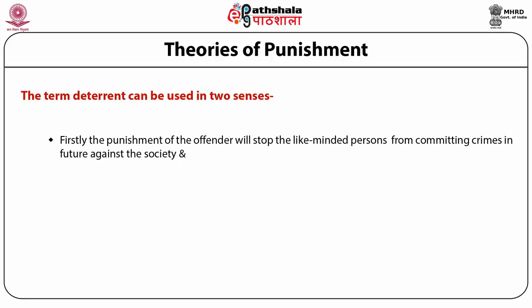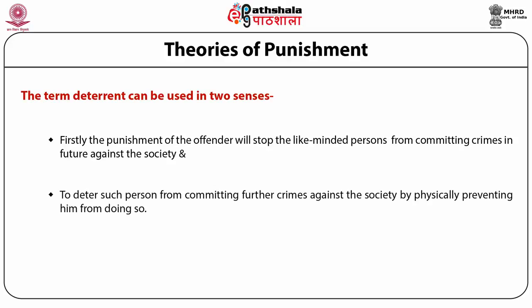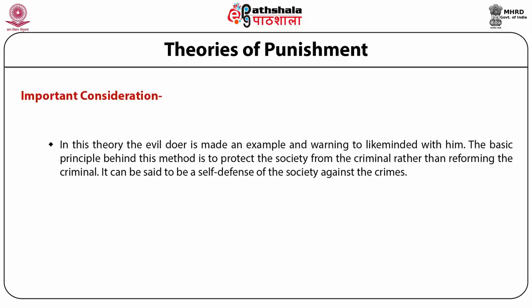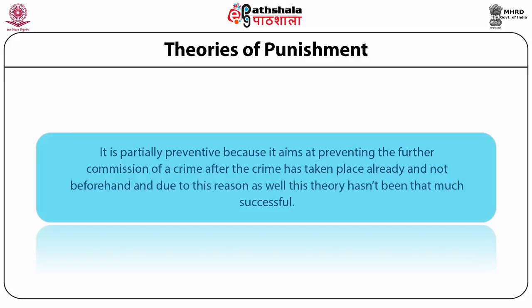The punishment of the offender will stop like-minded persons from committing crimes in the future. You can also deter such a person from committing further crimes against society by physically preventing him from doing so — there is an aspect of physical curtailment of an individual's liberty. The wrongdoer is made an example of and a warning to like-minded people is sent. The basic principle of the deterrent theory is to protect society from the criminal rather than reforming the criminal. The deterrent theory is partially preventive because it aims at preventing the further commission of a crime after the crime has already taken place. It hasn't been very successful for this reason. The deterrent theory still survives in the form of the death penalty for murder and drastic penalties imposed for rape and other crimes particularly offensive to the moral sentiments of the community.